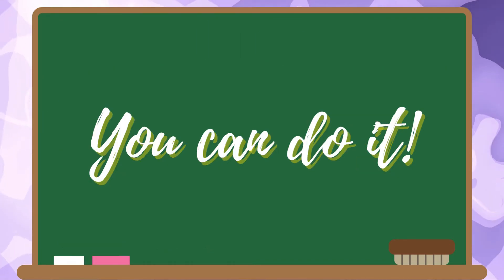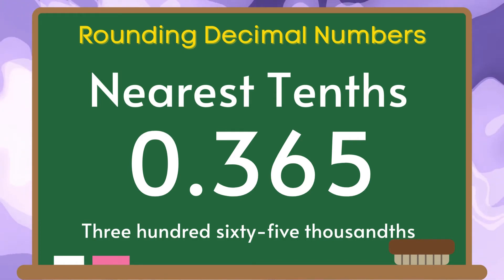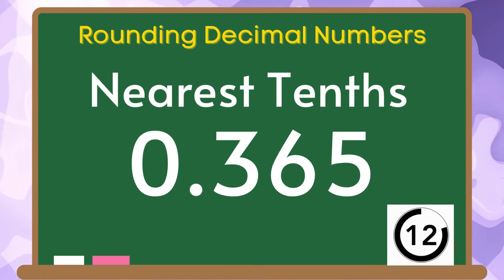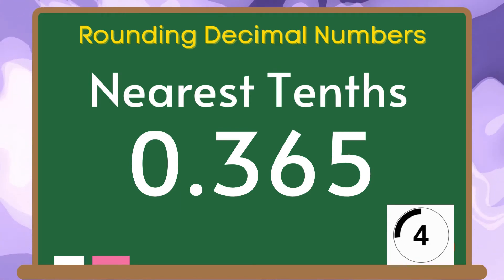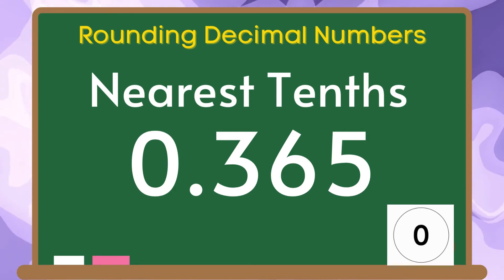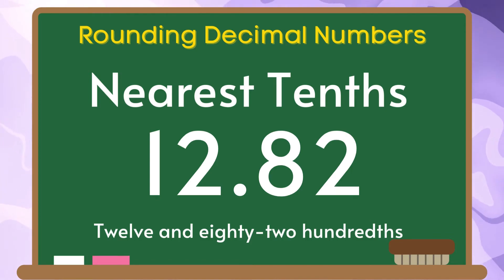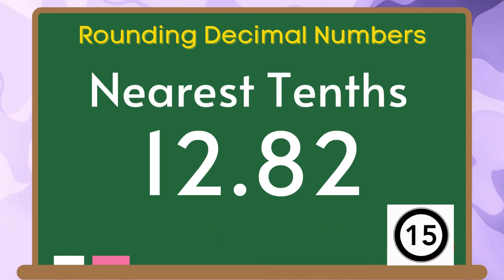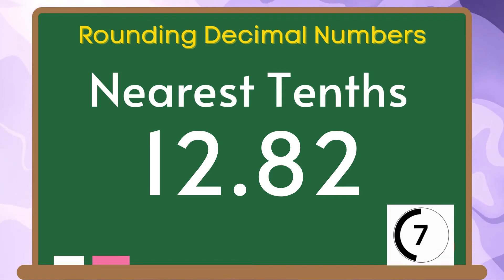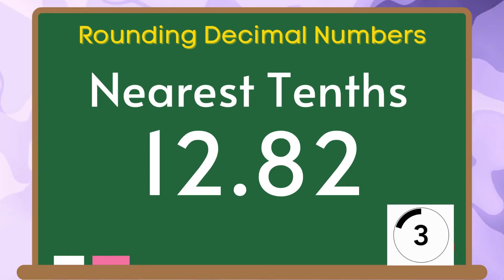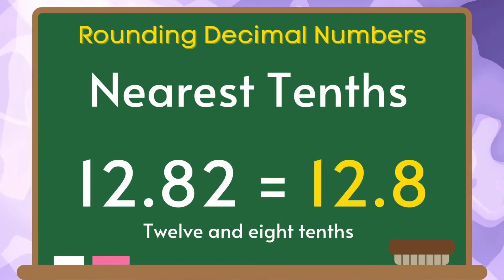Let us have some practice on what you've learned in this video. Round 365 thousandths to the nearest tenths. The correct answer is 4 tenths. Round 12 and 82 hundredths to the nearest tenths. The correct answer is 12 and 8 tenths.